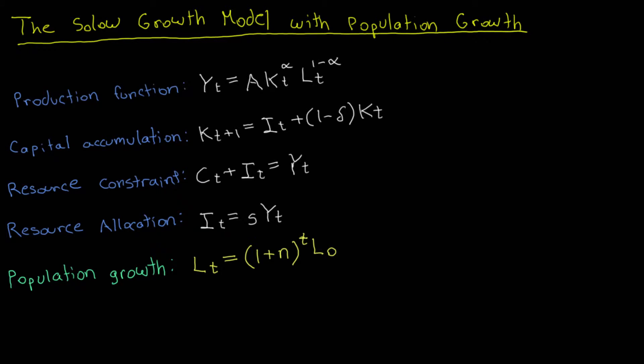Welcome to another entry in this video series on the Solow growth model. Up to this point, I covered a baseline version of the Solow model in which a steady state existed in both level and per capita terms of the endogenous variables of the model. With capital accumulation, growth eventually slows down until the economy reaches a steady state where growth ceases to exist. In contrast, if we allow for population growth in the Solow model, then only per capita variables will experience zero growth in a steady state, whereas level variables will experience a constant growth rate, also known as a balanced growth path. In this video, I will analyze the Solow growth model with population growth.